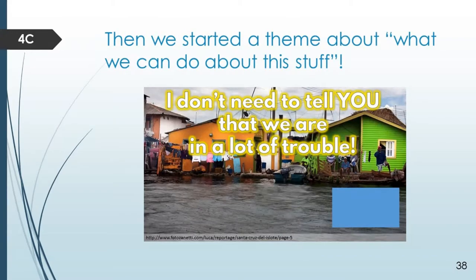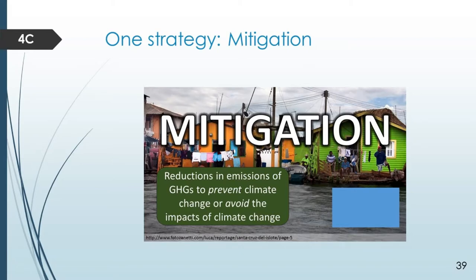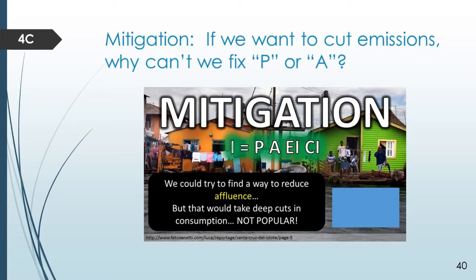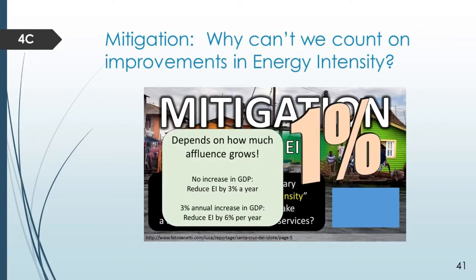Then we moved into Lecture 4c and started talking about what we are going to do about all of this climate change. One strategy would be mitigation — the idea of reducing emissions now to prevent climate change, or at least avoid the worst of it. We can go back to the IPAT relationship, where we've expanded the T term into energy intensity and carbon intensity. The P and A terms are basically off-limits — there's no meaningful way with any kind of social justice to attack either the population term or the affluence term in the context of climate change.